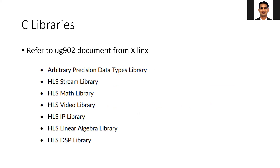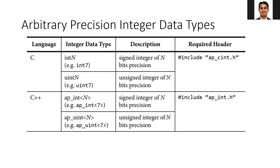For example, in today's lab, we are going to use the arbitrary precision data type. You can also use math library, video library, and so on. If you want to know more, please refer to the UG902 document from Xilinx. Now, in arbitrary precision data type, we can precisely specify how many bits are needed for every variable. Your variable can take integer data or real data.